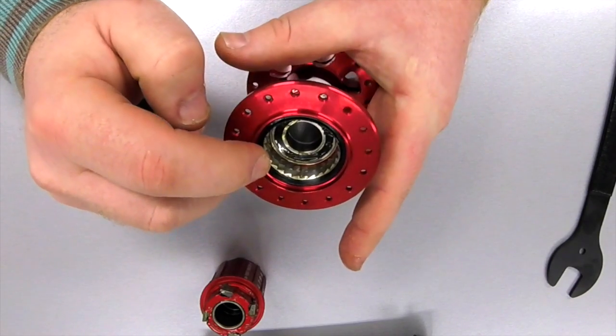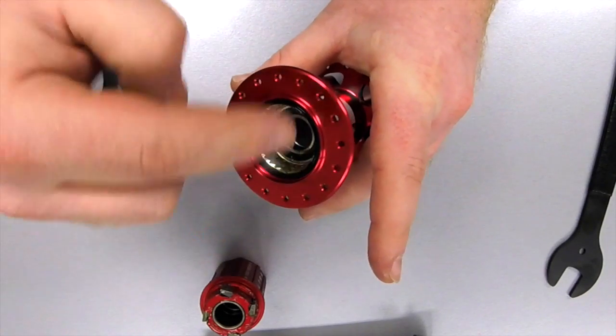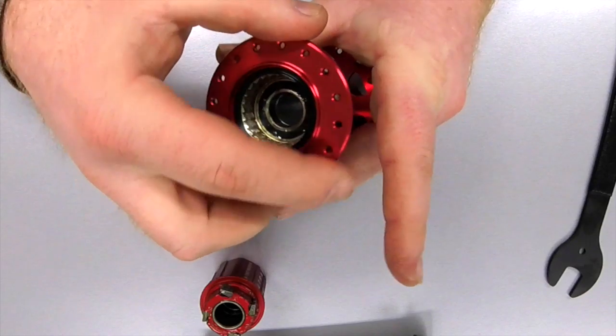Inside you have a toothed engagement ring which is a press fit or a screw fit depending on how old the model of hub is.